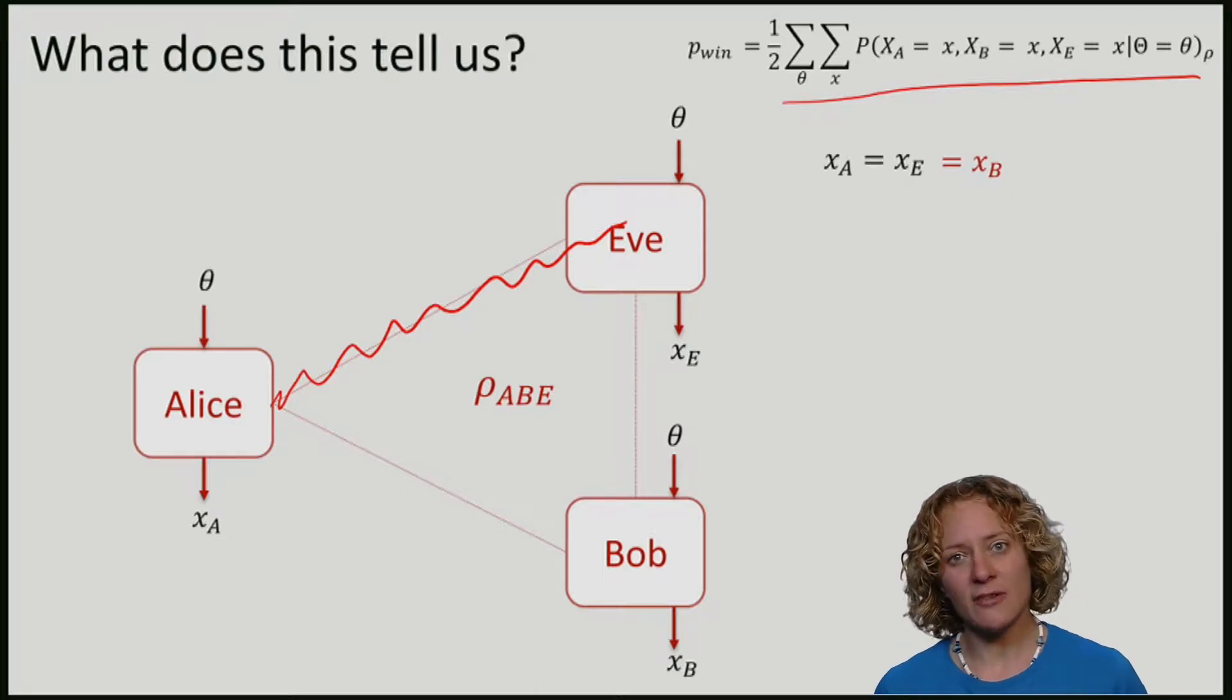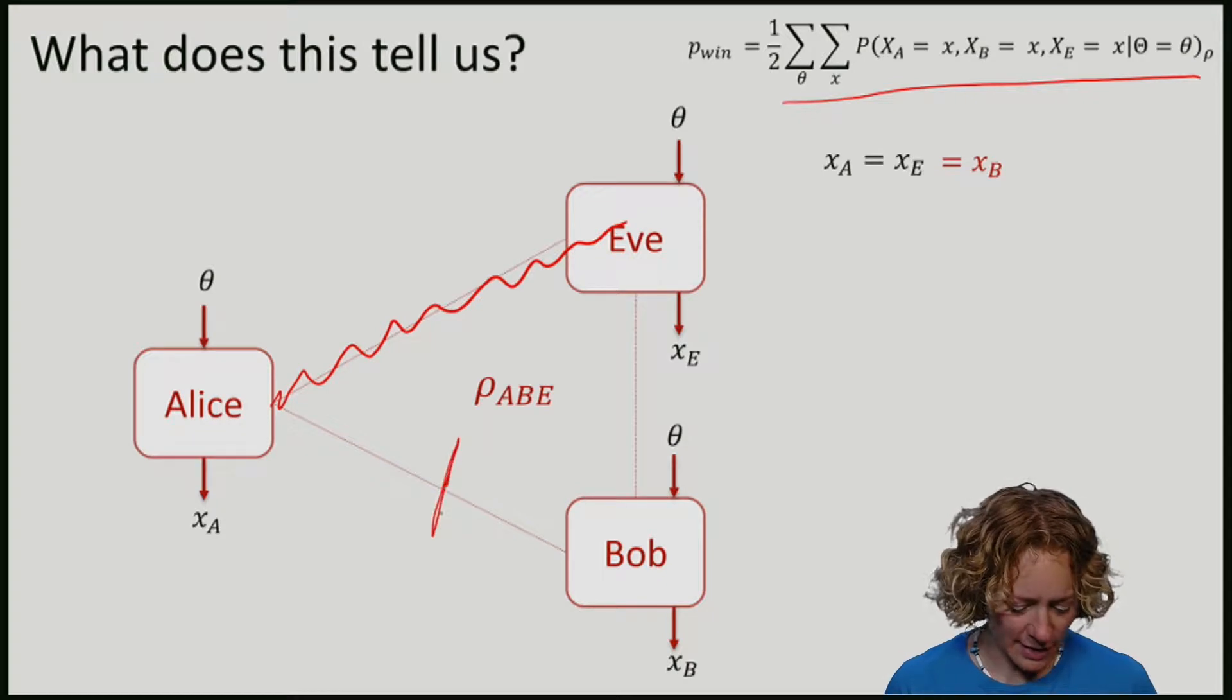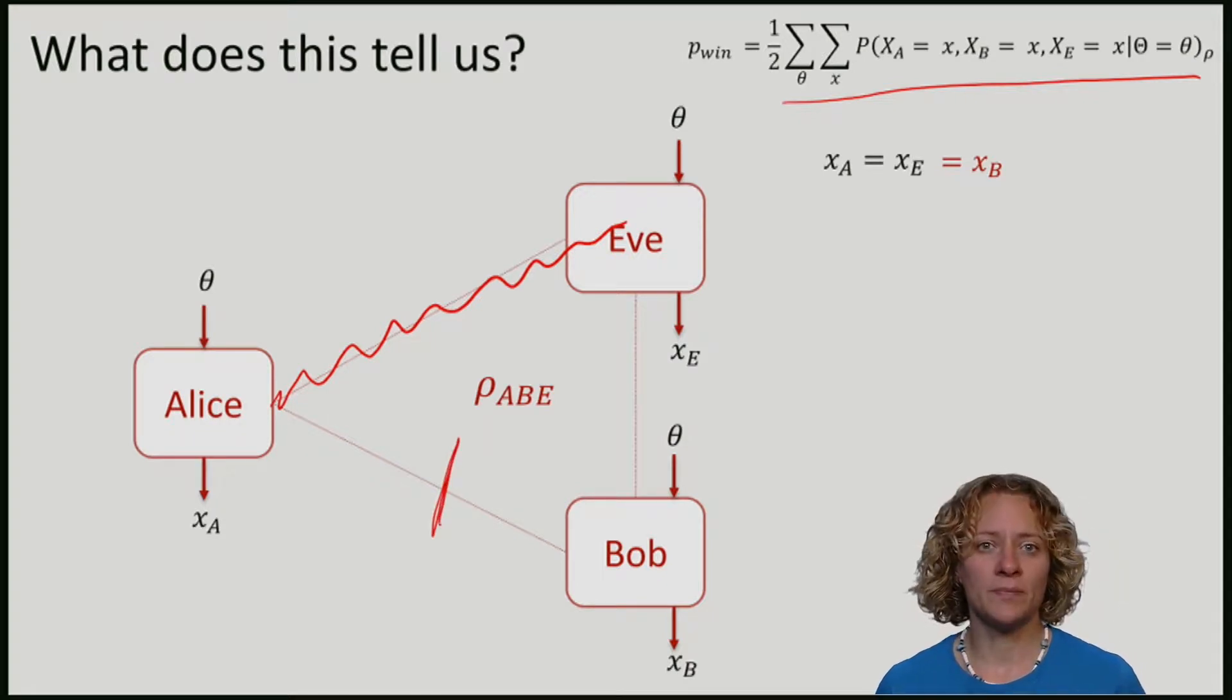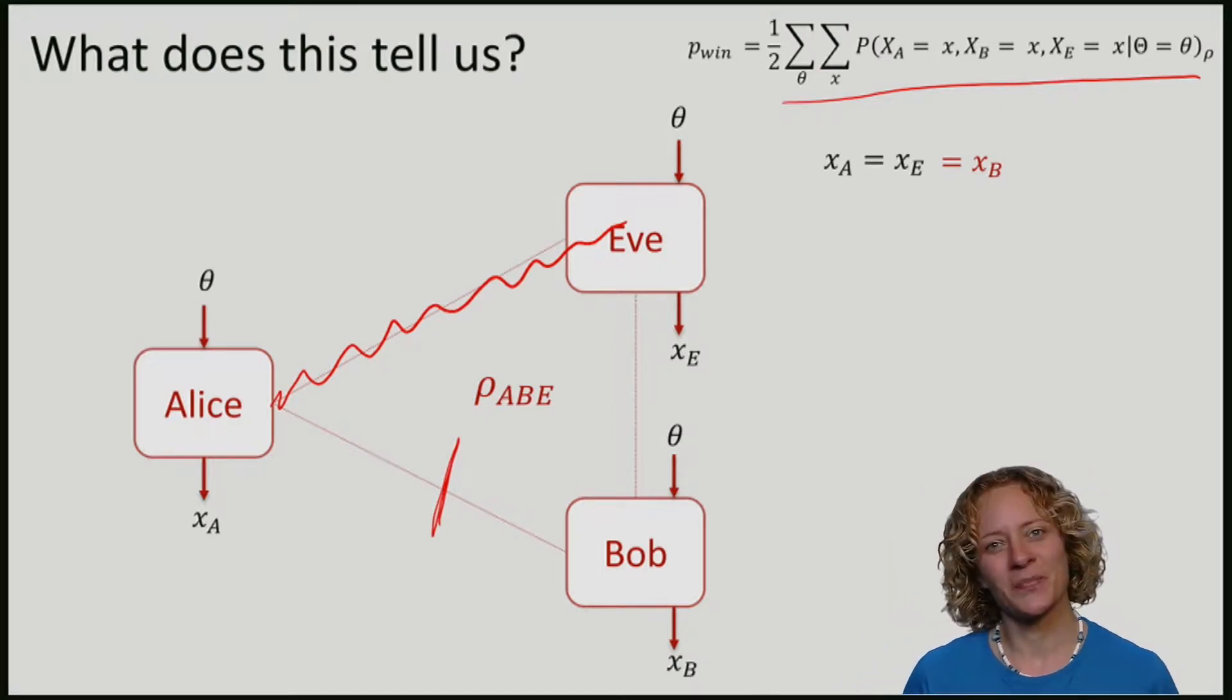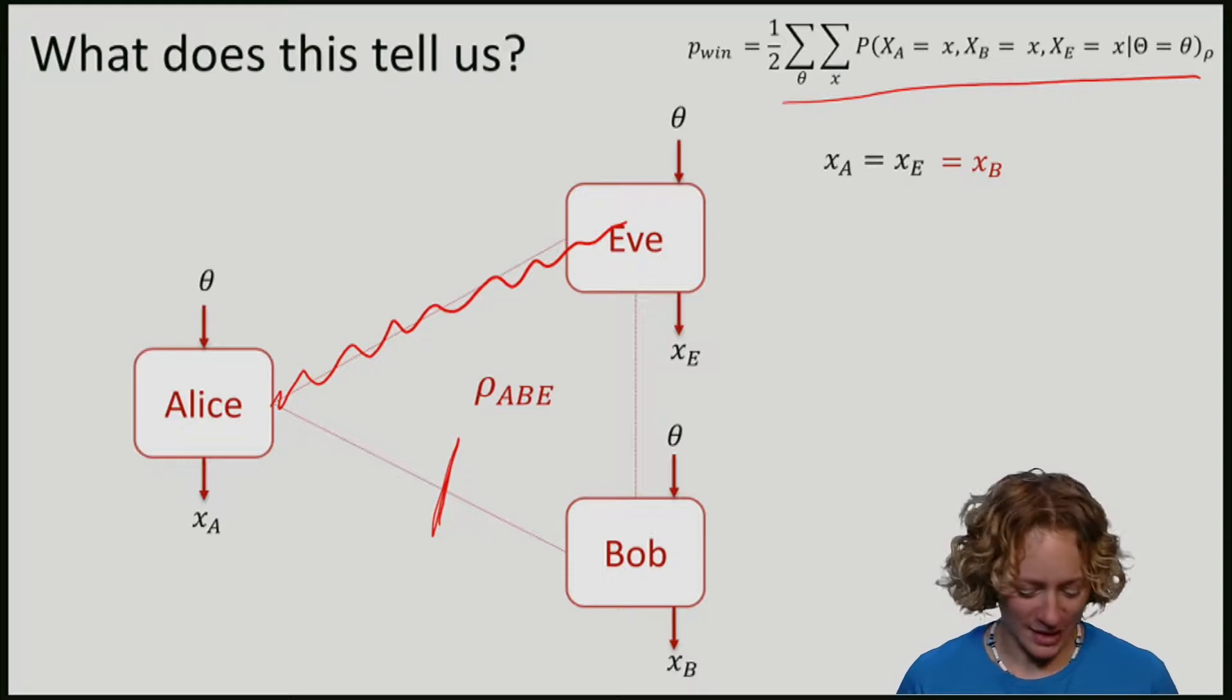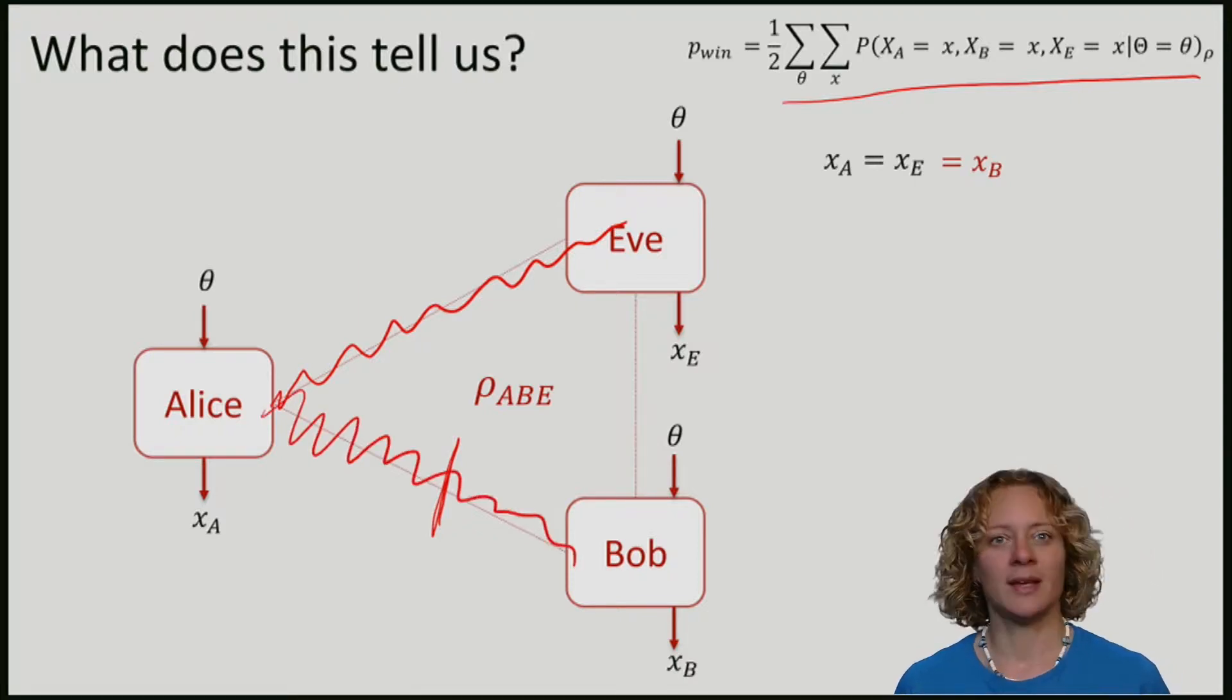This means that if Alice and Eve were actually highly entangled, there must be very little entanglement between Alice and Bob. Also, conversely, and this is what we are going to exploit here, if there is a lot of entanglement between Alice and Bob, then there is almost no entanglement between Alice and Eve, and therefore a lot of uncertainty for Eve.